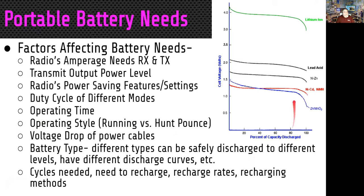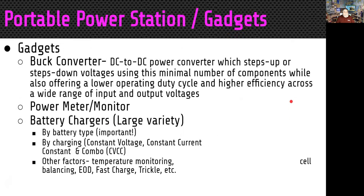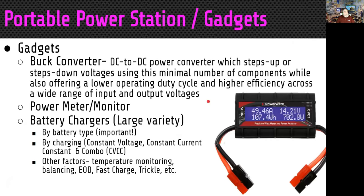Different battery types have different charge profiles. Lithium-ion has a big voltage drop-off early, whereas nickel metal hydride provides the same voltage for quite a while before dropping off at the end — similar to lithium iron phosphate. A buck converter allows DC-to-DC conversion to step up or step down voltages using minimal components, though you do lose a little power. You might also want an inexpensive battery monitor — a great way to track your batteries in the field.